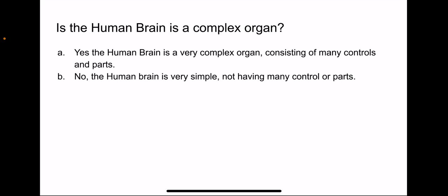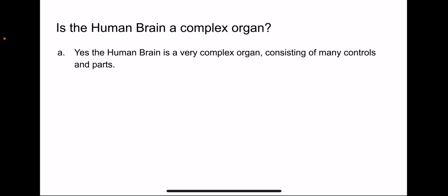Questions. Is the human brain a complex organ? A. Yes, the human brain is a very complex organ consisting of many controls and parts. B. No, the human brain is a very simple, not having many controls or parts. The correct answer would be A. So yes, the human brain is a very complex organ.